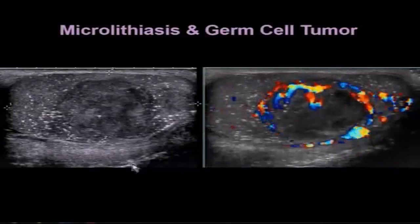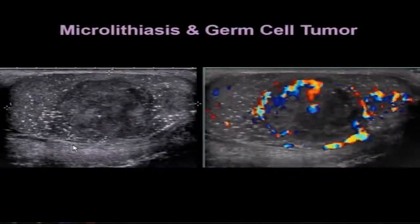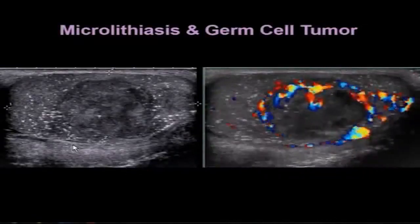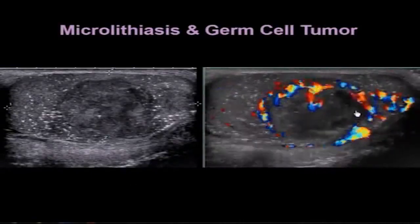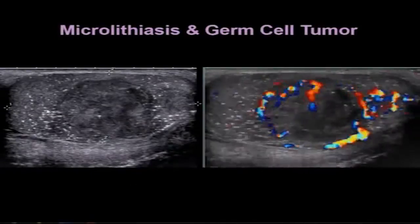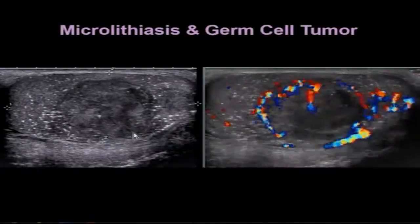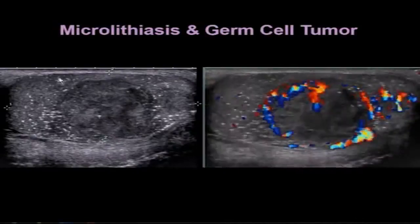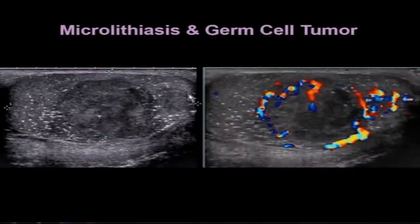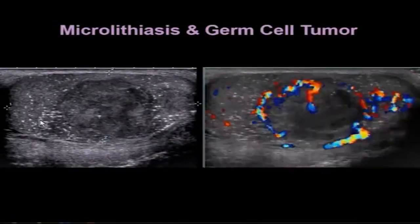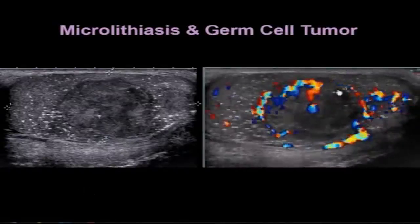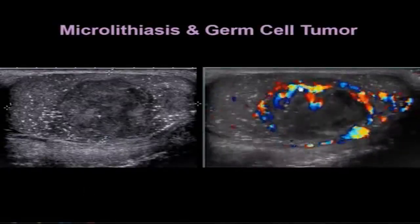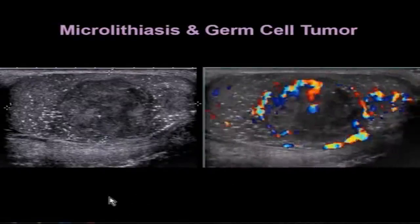This patient also has microlithiasis but developed a germ cell tumor. You can see the tumor centrally located inside the testicle — it's a hypoechoic mass. The parenchyma around the testicle has those bright microlithiasis echoes surrounding it inside the parenchyma, and notice the increased vascularity associated with the tumor.